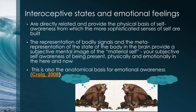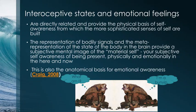When we think about our emotional feelings and our sense of how we are feeling within ourselves, these are directly related to our sense of embodied self — our sense of who we are and how we exist. The representation of our body signals, and the meta-representation of the state of the body in the brain, gives us a subjective mental image of ourselves. This is known as the embodied sense of self — if you're interested, you can read Bud Craig's work.